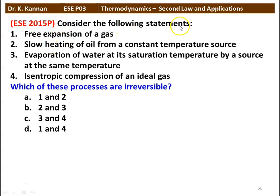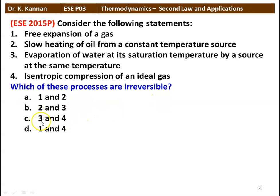Next question: Consider the following statements: (1) Free expansion of gas; (2) Slow heating of oil from a constant temperature source; (3) Evaporation of water at its saturation temperature by a source at the same temperature; (4) Isentropic compression of ideal gas. Which of these processes are irreversible? The answer is 1 and 2. Free expansion of gases is irreversible, and slow heating of oil at constant temperature is also irreversible.